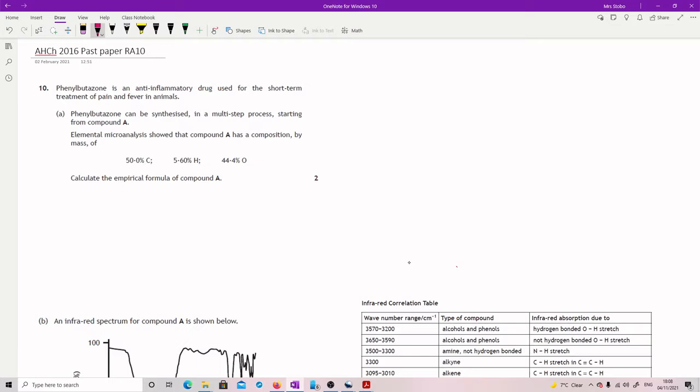Phenyl butazone is an anti-inflammatory drug used for the short-term treatment of pain and fever in animals. Phenyl butazone can be synthesized in a multi-step process starting from compound E. Elemental microanalysis showed that compound E has a composition by mass of 50% C, 5.6% hydrogen and 44.4% oxygen. Calculate empirical formula.